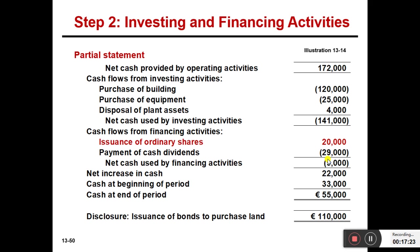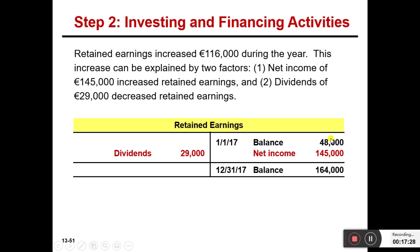Looking at a couple more slides: for financing activities, dividends of 29,000 — to understand this, prepare a retained earnings account in your working. This is the statement of retained earnings: beginning balance given, ending balance given. One item credits it — net income from the income statement — and dividends of 29,000 debit it. This way everything tallies correctly. That's all from the cash flow statement.